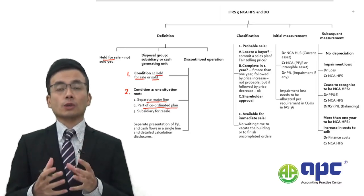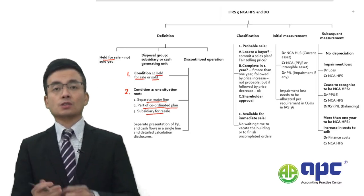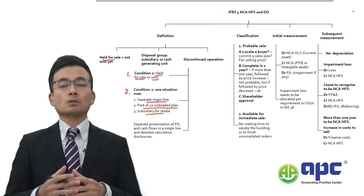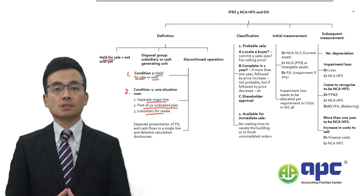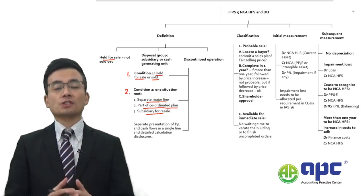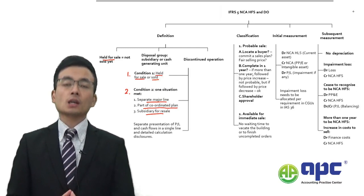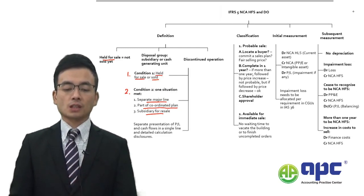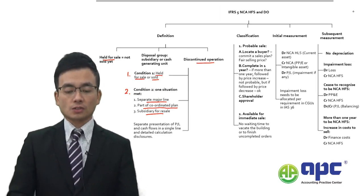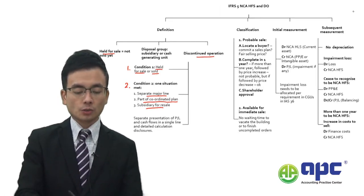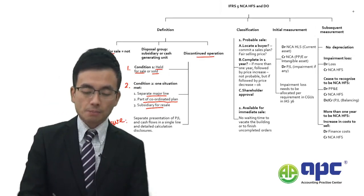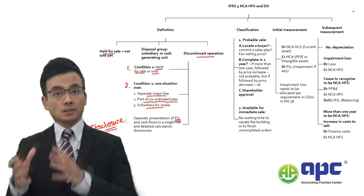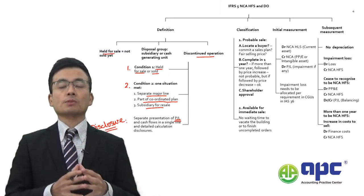If you acquire a subsidiary for resale — meaning you decide to buy the subsidiary but aim to resell it very quickly to somebody else — that is the second condition met. If both conditions are met, it qualifies as a discontinued operation. If it qualifies as a discontinued operation, it is only a disclosure requirement rather than a change in how you book it into the accounts.